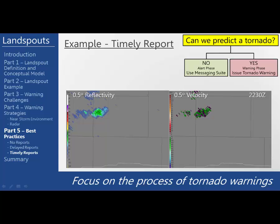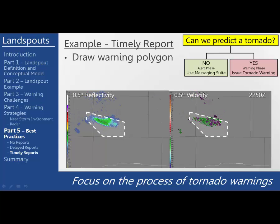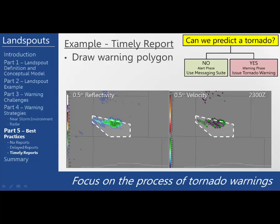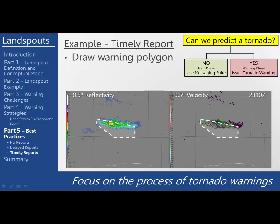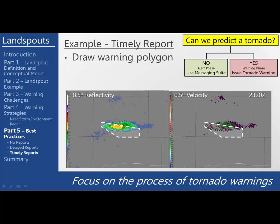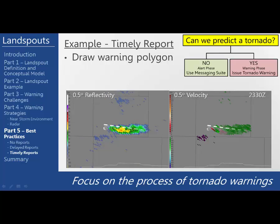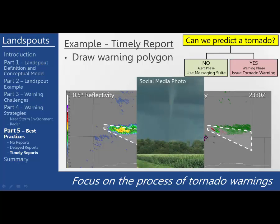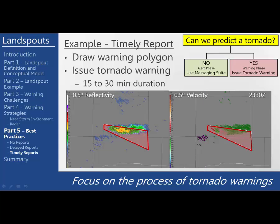For this scenario, we will continue using the same thought process as the previous two. As the storm continues to develop, we start to draw a warning polygon along the storm, keeping it small and updated with each scan. Now let's imagine the same image was posted on social media and directed to our office, only this time it came in as the landspout was ongoing. The storm still sits along the boundary and there's even some rotation on radar. Since you already have the warning polygon drawn up, you can quickly send out a short-duration tornado warning once you receive a reliable report.